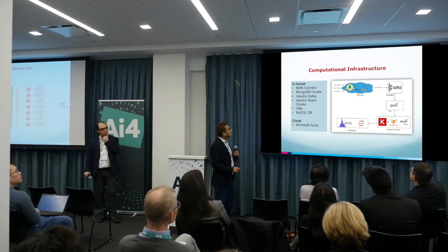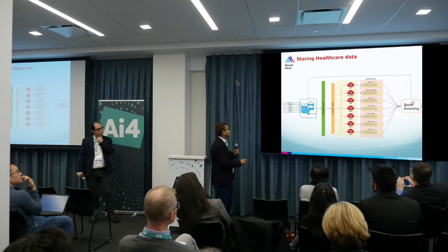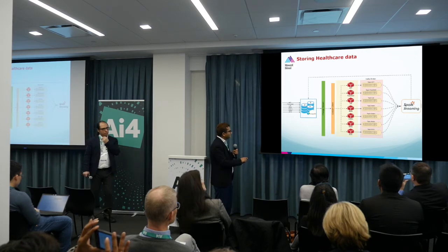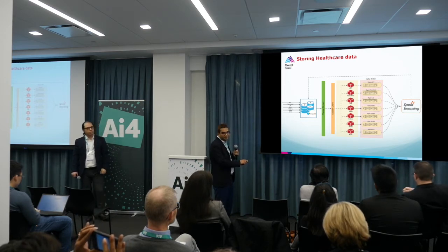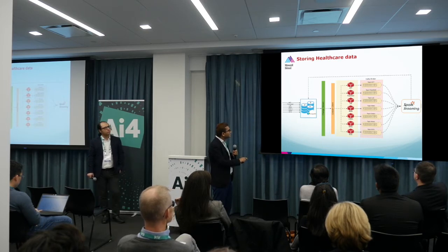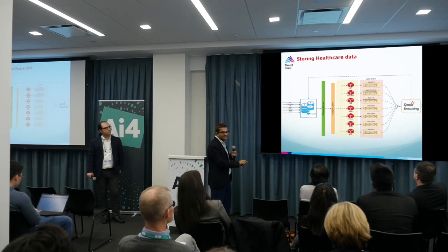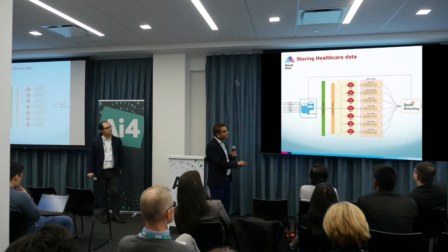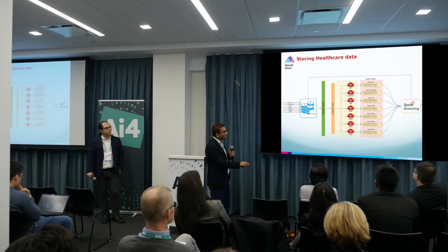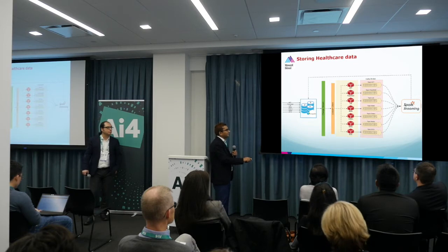Let's talk about how data flows in our system. We have streams of messages — ADT, flow sheet, lab — and we write them as-is into MongoDB. From MongoDB, we have the change stream feature enabled: if there is any update in the database, it creates a stream of data from MongoDB. We have a custom client written in Go programming language, which writes this data into a Kafka producer. We have different Kafka topics corresponding to each channel. From Kafka, we have Apache Spark streaming engines running, which pick messages from Kafka topics and process them.